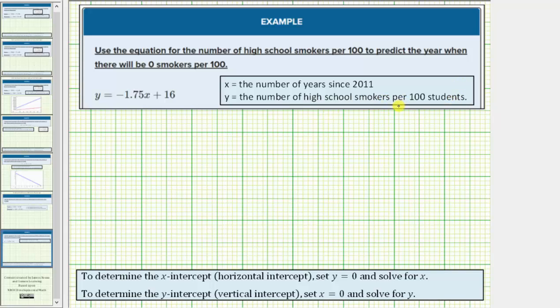Because we're looking for when there will be zero smokers per 100, we want to determine the x value where y would be equal to zero. So as an ordered pair, we're looking for the x value where the y value would be zero. Notice how this would be the x-intercept of the linear equation.